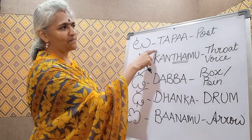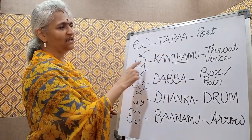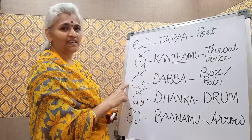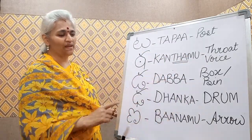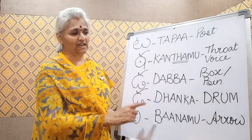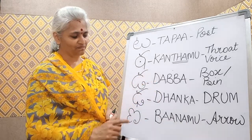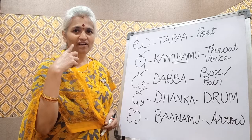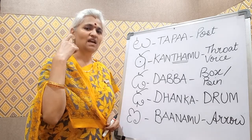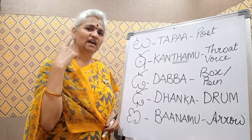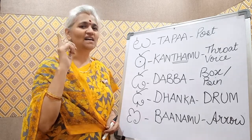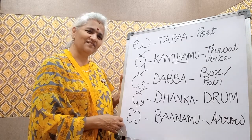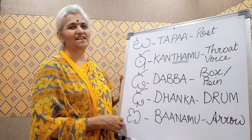To recap: TA — TAPA, meaning post. THA — KANTHAMU, meaning throat or voice. DA — DABBA, meaning box or bin. DHA — DHANKA, meaning drum. ANA — BANAMU, meaning arrow. For all five, you should touch the palate: TA, THA, DA, DHA, ANA. That's all for now. We shall meet with the next five letters in the next video. Namaste.